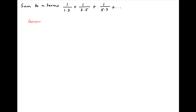The general term, or the r-th term of the given series, let's denote it by ur, is equal to 1 upon the product of two components. The first component is the r-th term of the series 1, 3, 5 and so on, that is 2r minus 1. And the second component is the r-th term of the series 3, 5, 7 and so on, that is 2r plus 1.